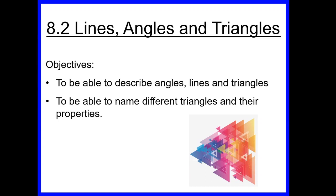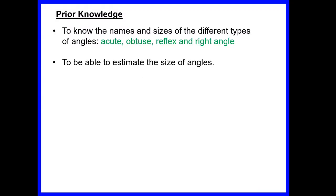Today we are going to be able to describe angles, lines, and triangles, and to name the different triangles and their properties. Before we start, let's check our prior knowledge. To complete this lesson you should already know the names and sizes of the different types of angles: acute, obtuse, reflex, and right angles, and you should also be able to estimate the size of angles. If not, please stop this video and go back to the previous one.